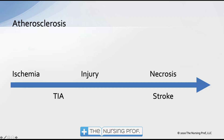Looking at the ischemia and injury components, this is where TIAs occur. In the past, we thought TIAs just involved decreased blood flow with no long-term damage. We now know long-term damage does occur. Using PET scans and metabolic imaging, we can find areas of the brain injured during a TIA. However, that injured area's function can be taken over by another brain region, causing symptoms to resolve. If the injury is large enough that function cannot be regained, we call that a stroke.